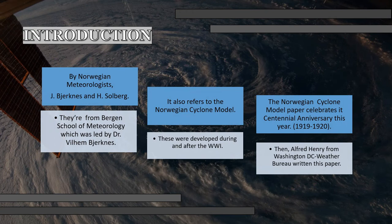Before we start, here are the things we should know about the paper. Even though it was written by Alfred, the theories and models were actually developed by two Norwegian meteorologists, namely Jacob Bjerknes, also known as Jack, and Halvor Solberg. They are both from Bergen School of Meteorology, which was headed by Dr. Vilhelm Bjerknes, who is also the father of Jacob, and a very influential man in meteorology due to his contributions and discoveries.